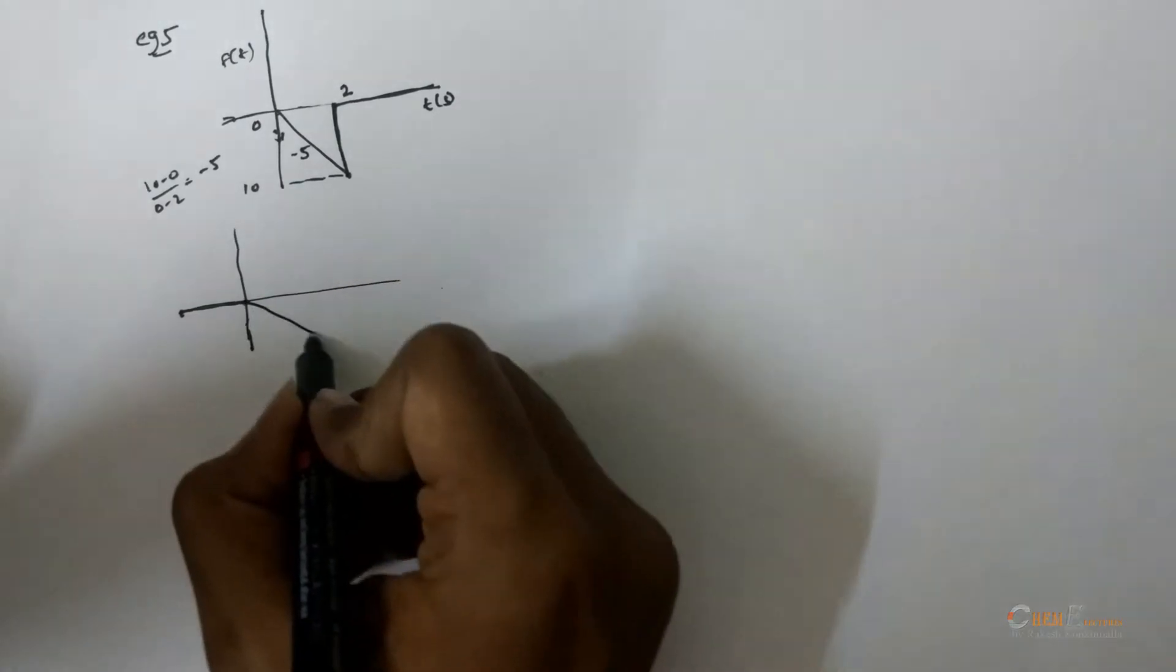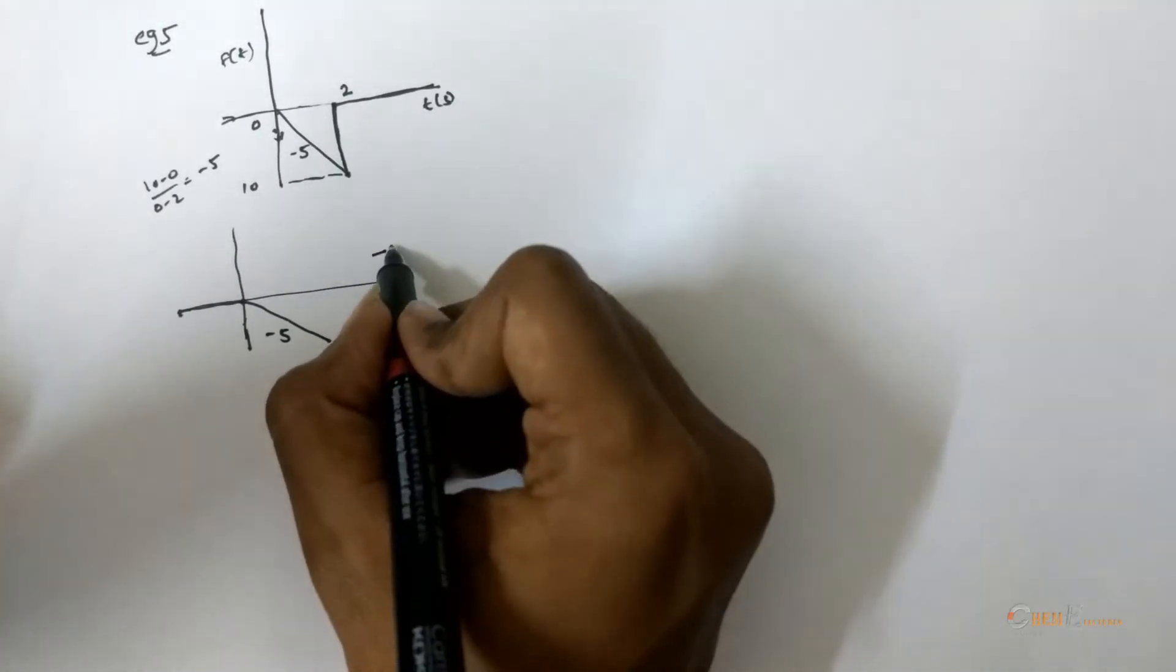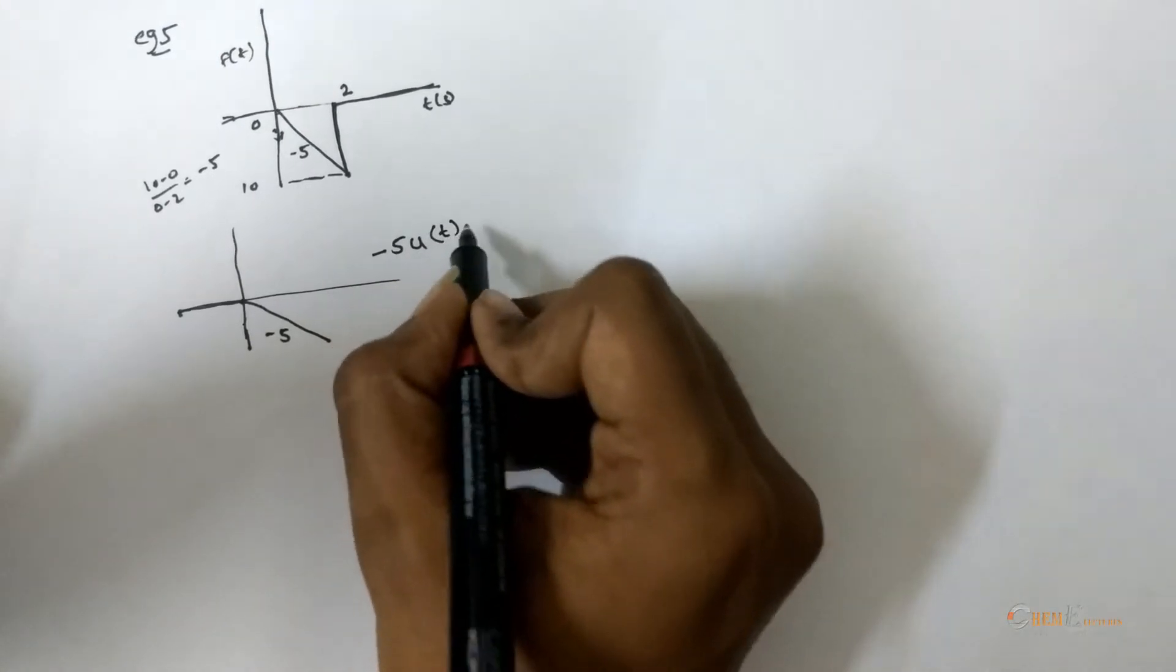It is decreasing with the slope minus 5. For this, f will be minus 5 u into t.